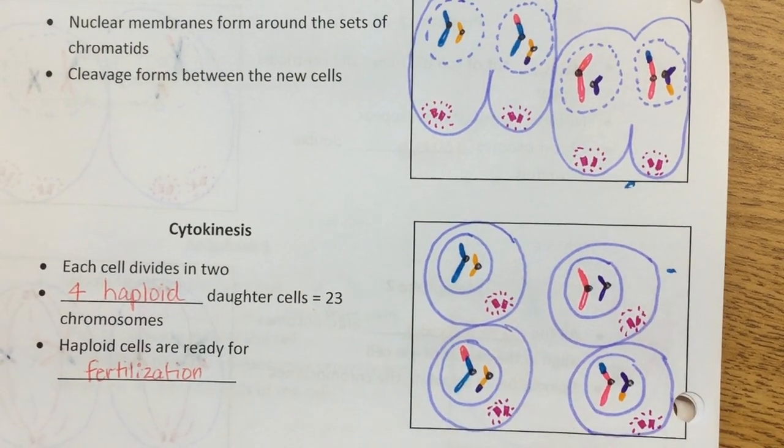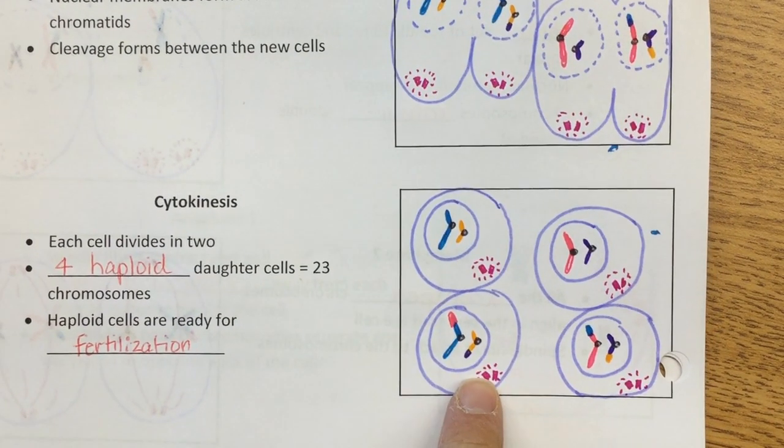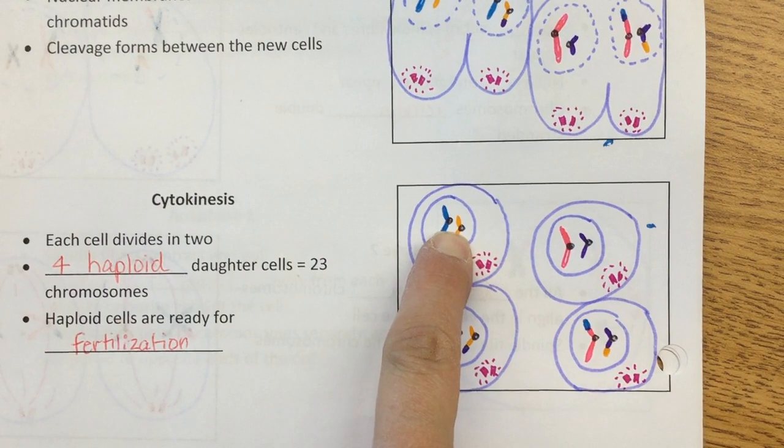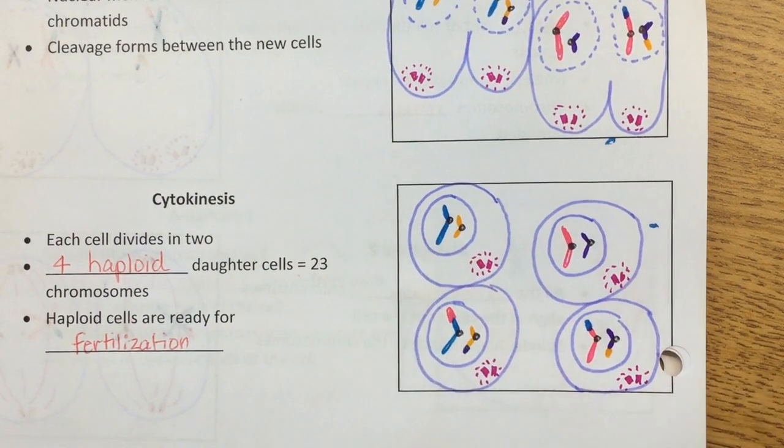And I add my centromeres and finish with my little centrioles. Okay, so see the end is haploid cells, okay? Each one has two centromeres, okay? Two chromatids, okay?